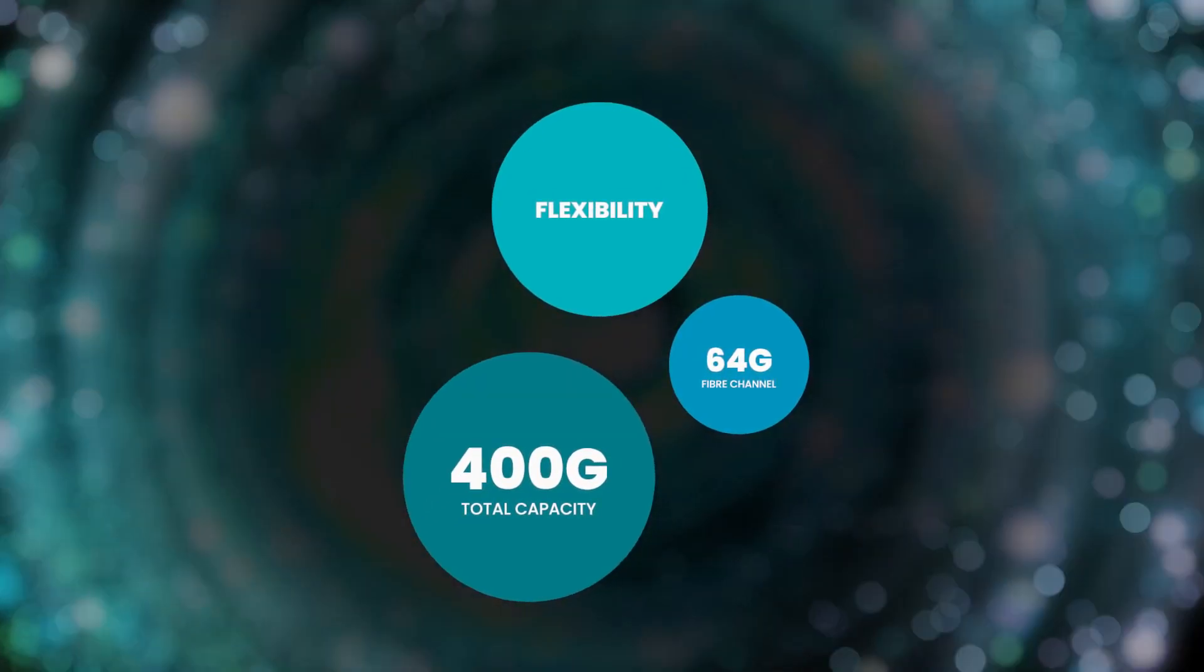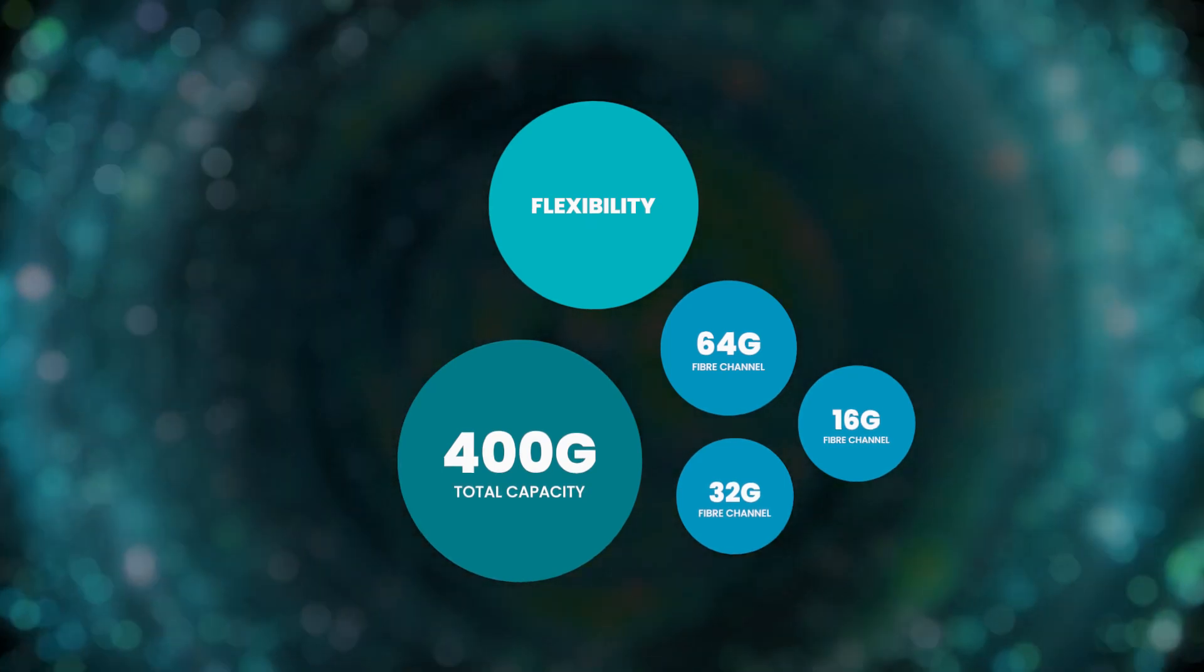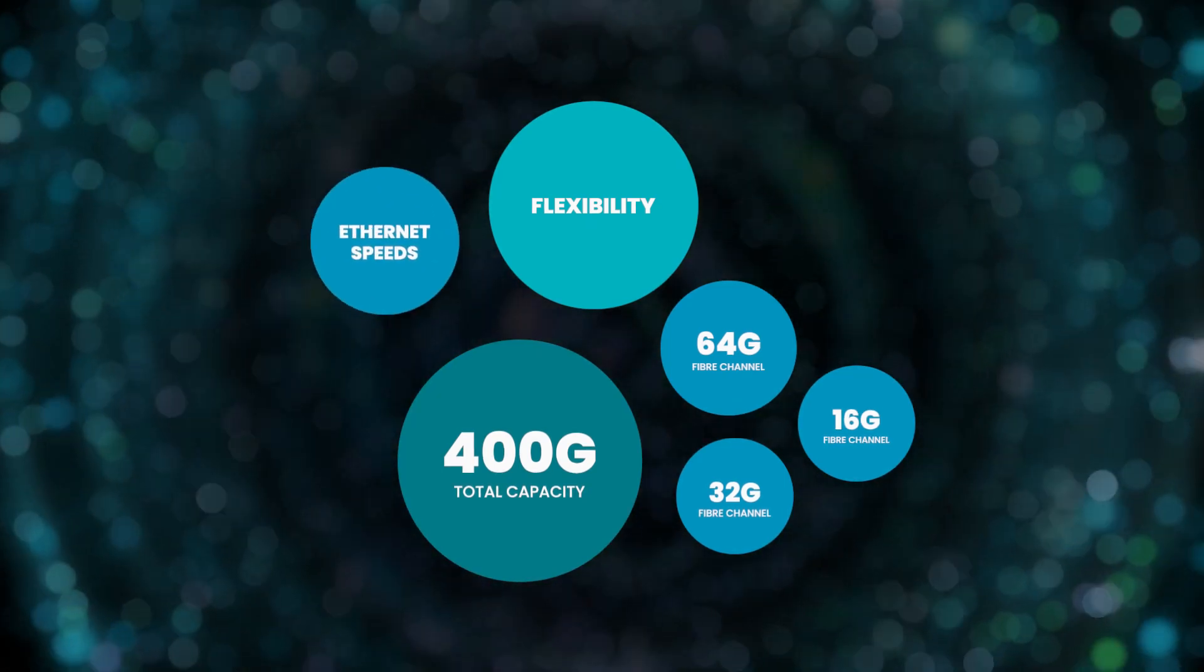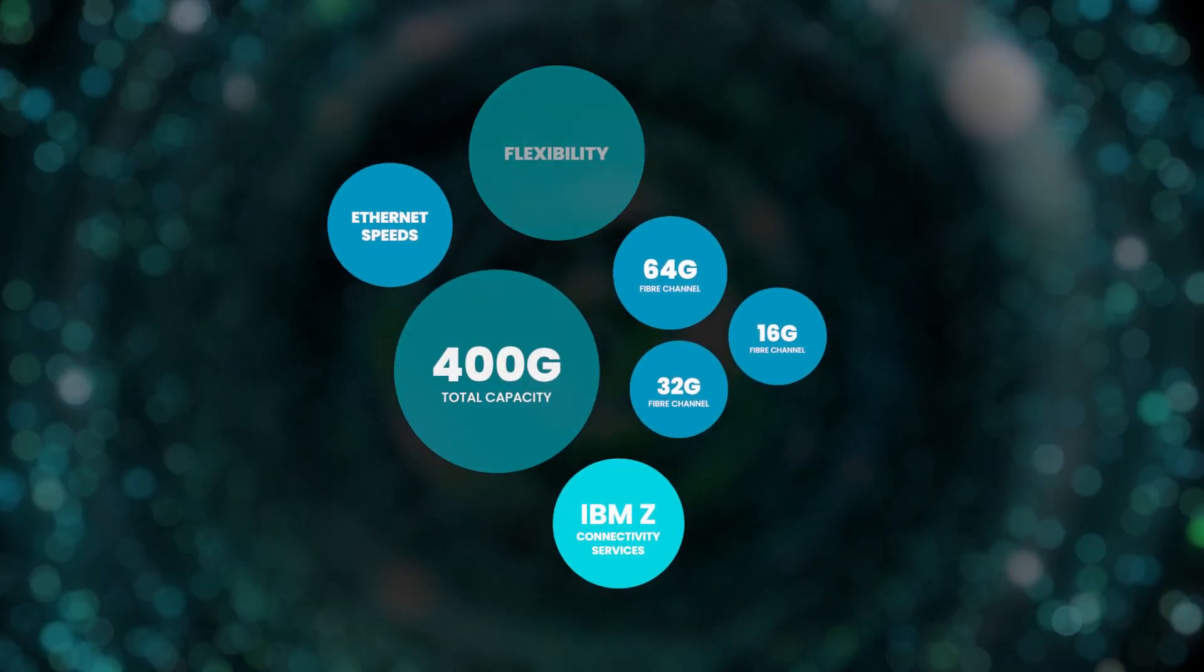Whether you're looking for fiber channel at 64G, 32G or 16G, S-Flex has you covered. It also accommodates a broad range of Ethernet speeds and even IBM Z connectivity services.